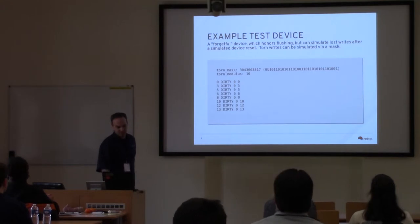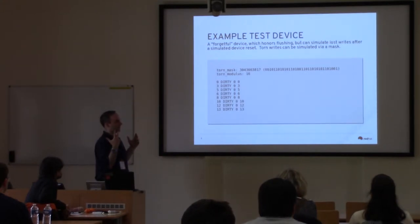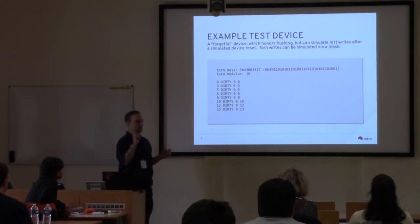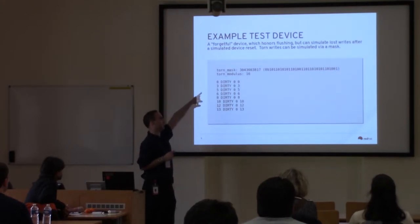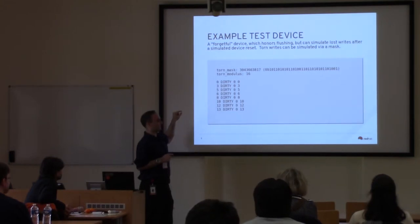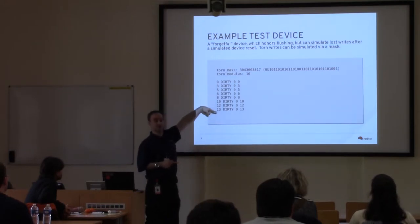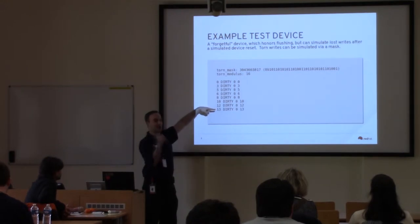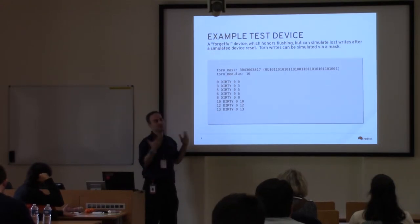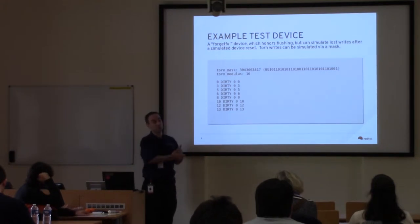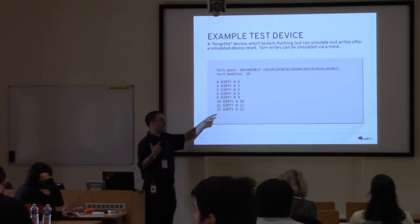There's another device called the forgetful cache, which honors flushes but simulates the behavior of lost writes after a crash. You can also program a partial forgetful cache with a bit mask and a modulus. There's a status field in sysfs for this target where it will list which blocks are dirty in the cache at a specific time, which you can tell it to stop and then simulate a crash. We've had drives that somehow tear on write and we don't know where they were torn until after — this helps simulate the pattern and find bugs.